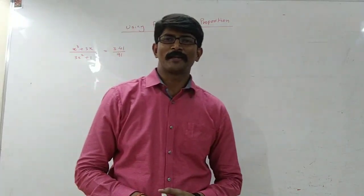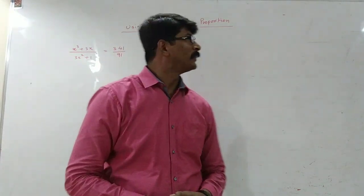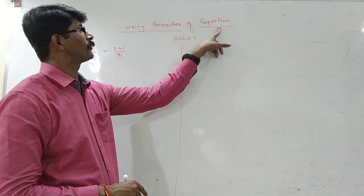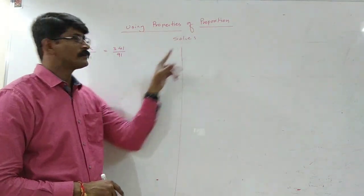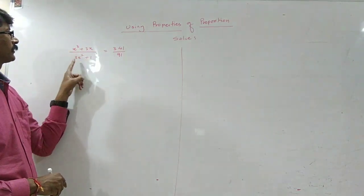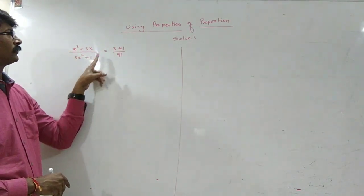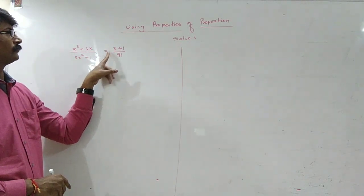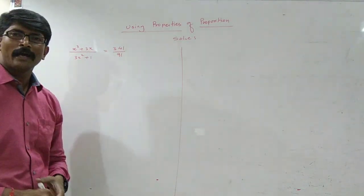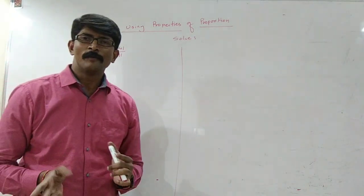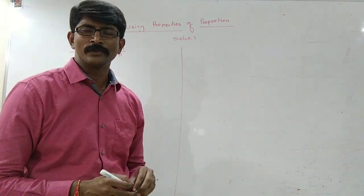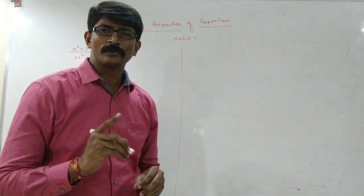Hello students, today I am going to teach you how to use properties of proportion to solve some equations. We have given the equation x³ plus 3x upon 3x² plus 1, which equals 341 upon 91. By using properties of proportion we have to solve this equation, so first of all you must know what the properties of proportion are.